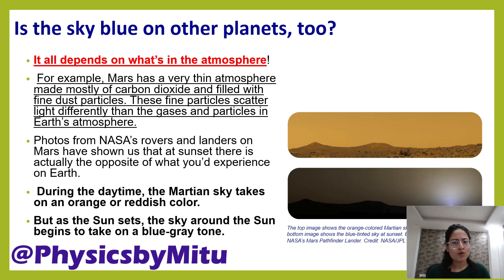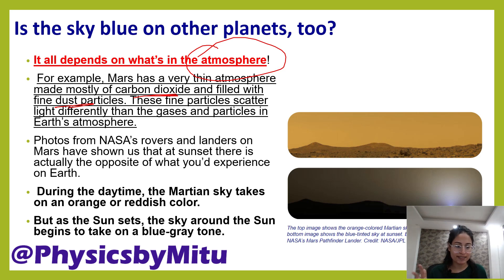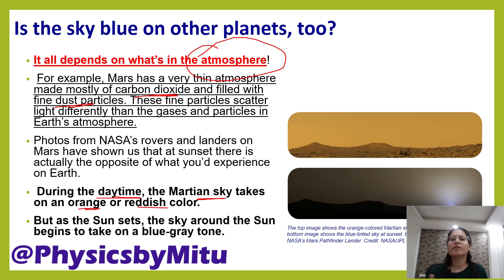Is the sky blue on other planets too? Of course, it depends on the atmosphere — which gases and which particles are present. For example, Mars's atmosphere has CO2 and fine dust particles, so scattering of different wavelengths takes place. The Martian sky looks orange or reddish in color during the daytime because of its atmosphere, and at sunset it takes on a blue-gray tone.